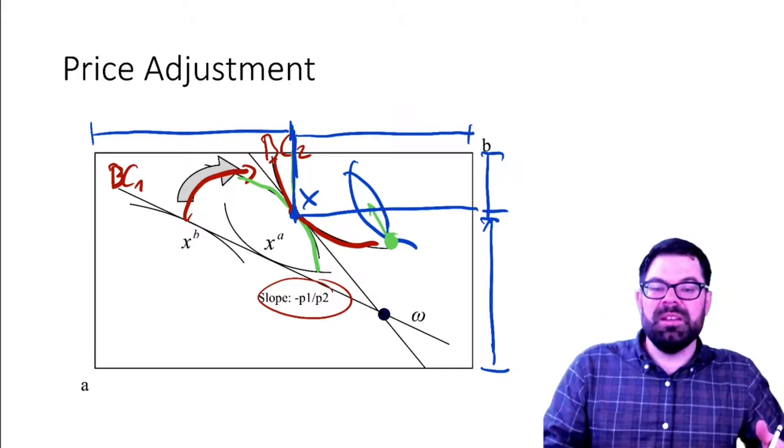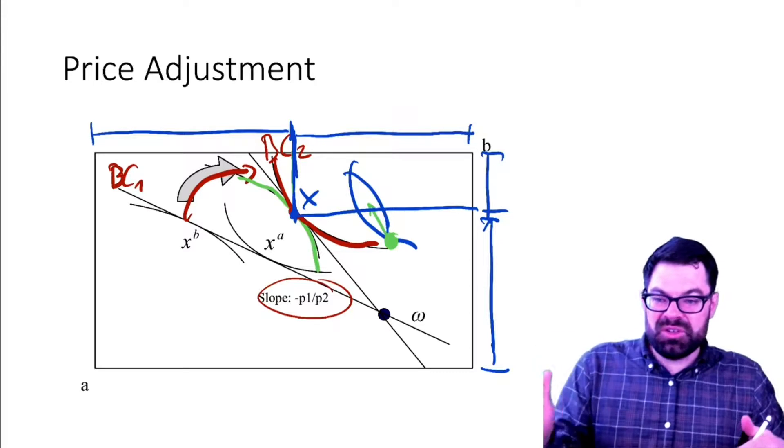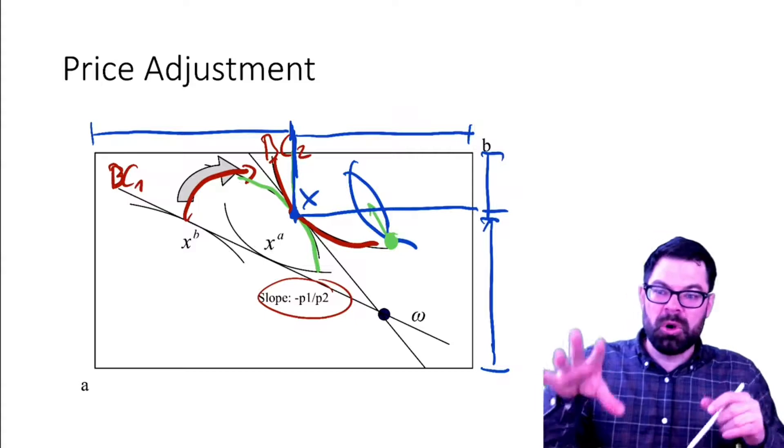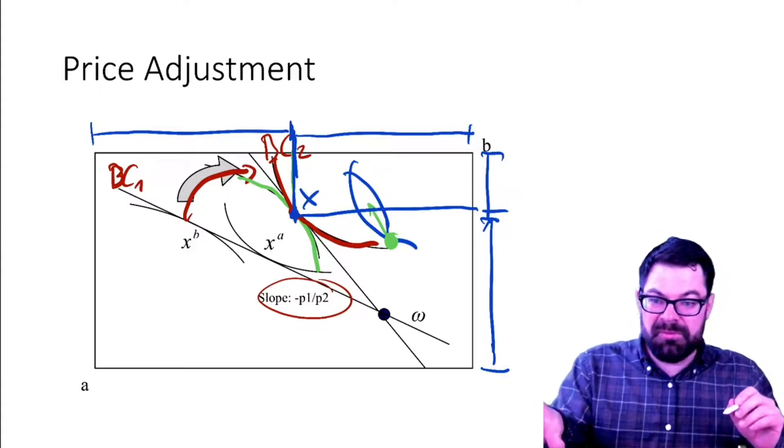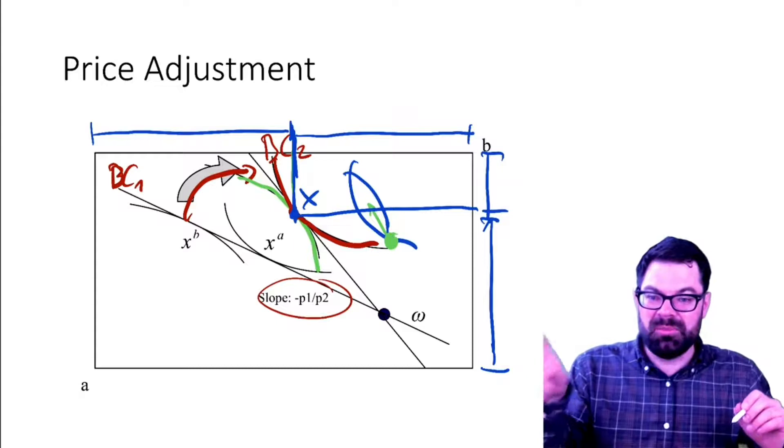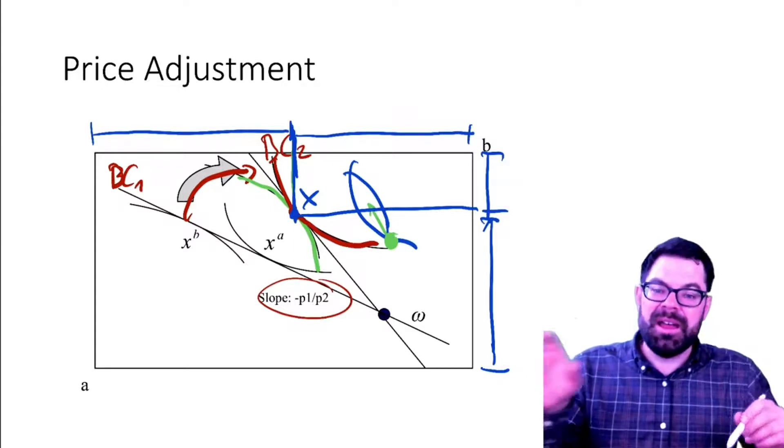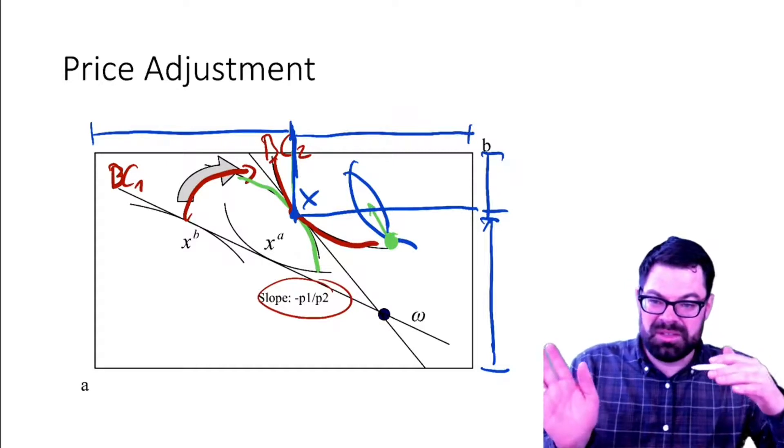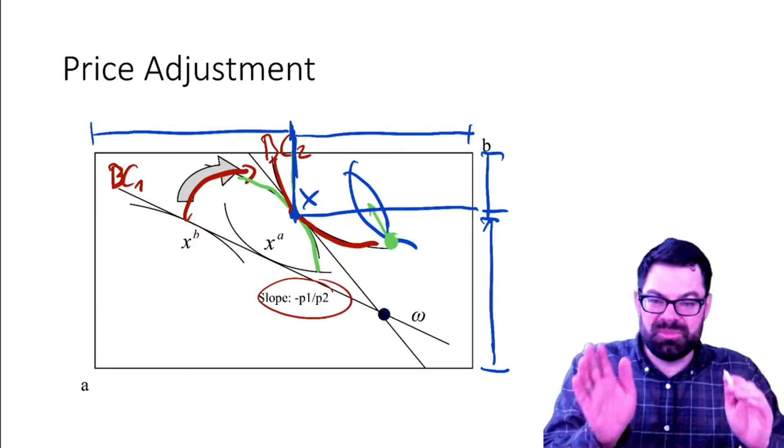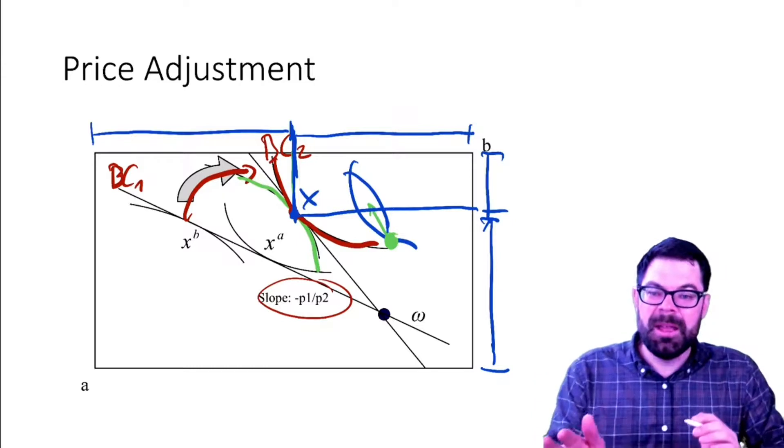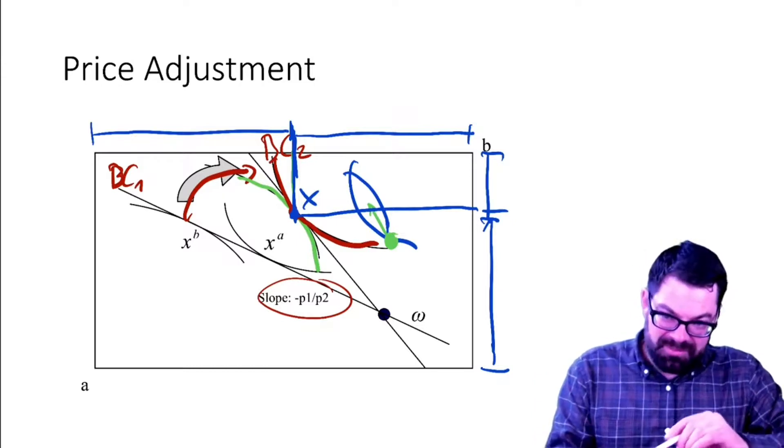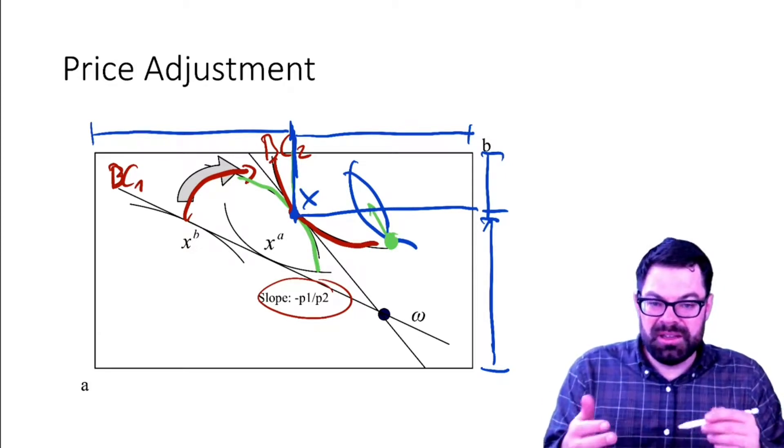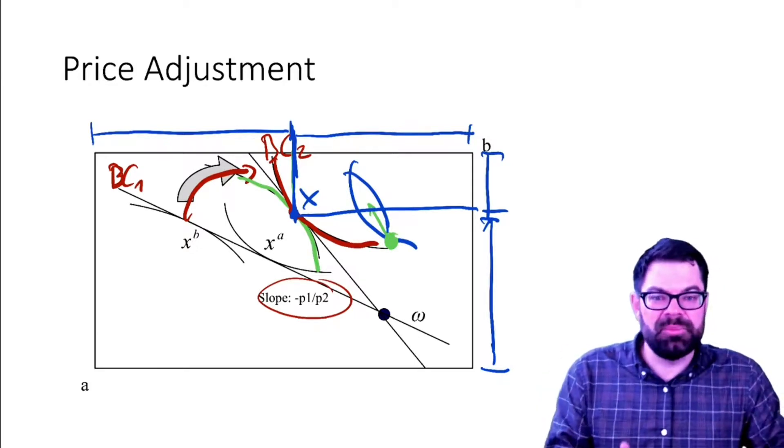And they moved into equilibrium from this initial budget constraint where one good was too cheap given the preferences of both people and the other one was relatively too expensive. So by changing the prices, by prices adjusting and that budget constraint pivoting, we actually get to a new equilibrium, or to get to an equilibrium whereby supply equals demand in each market.